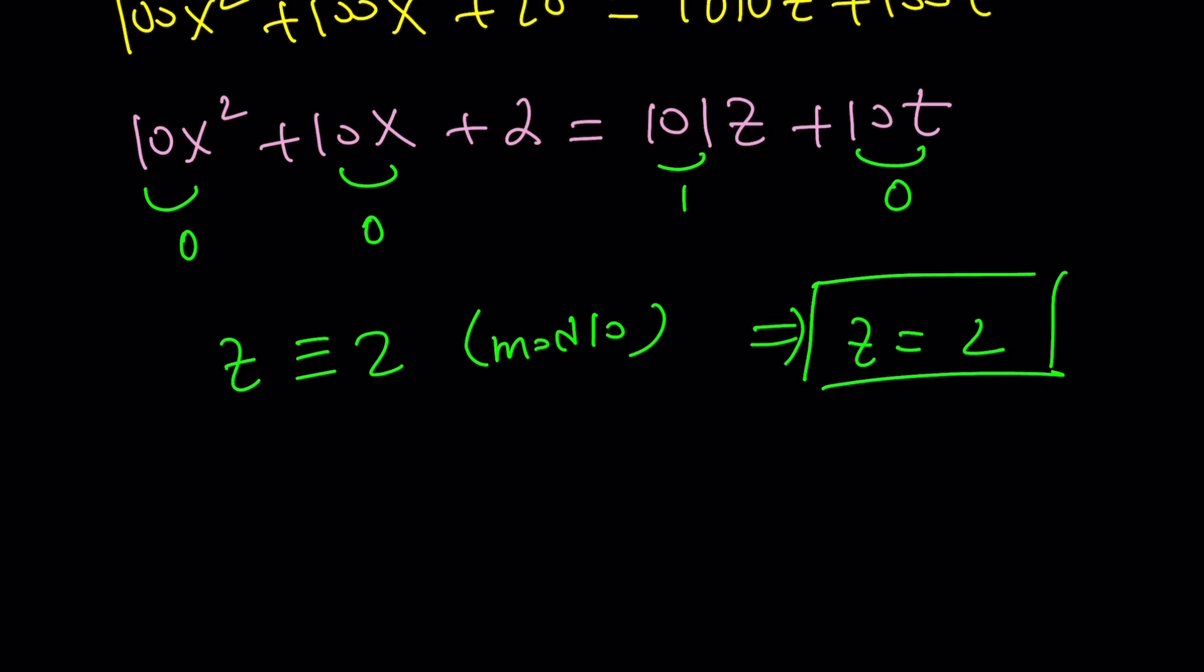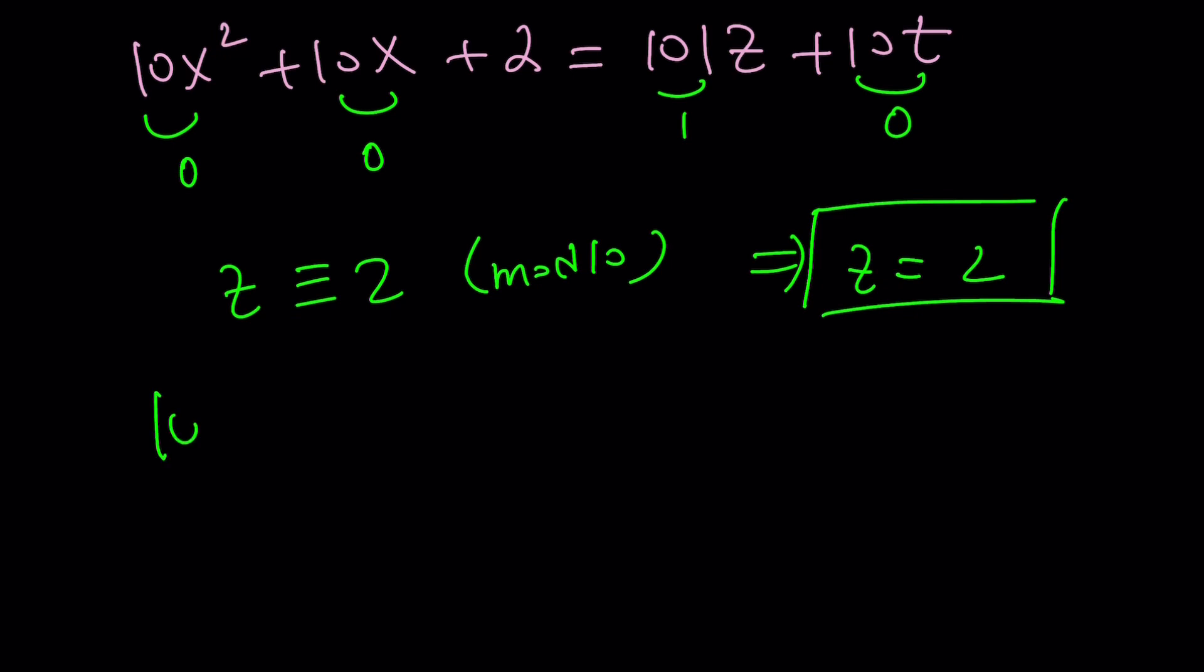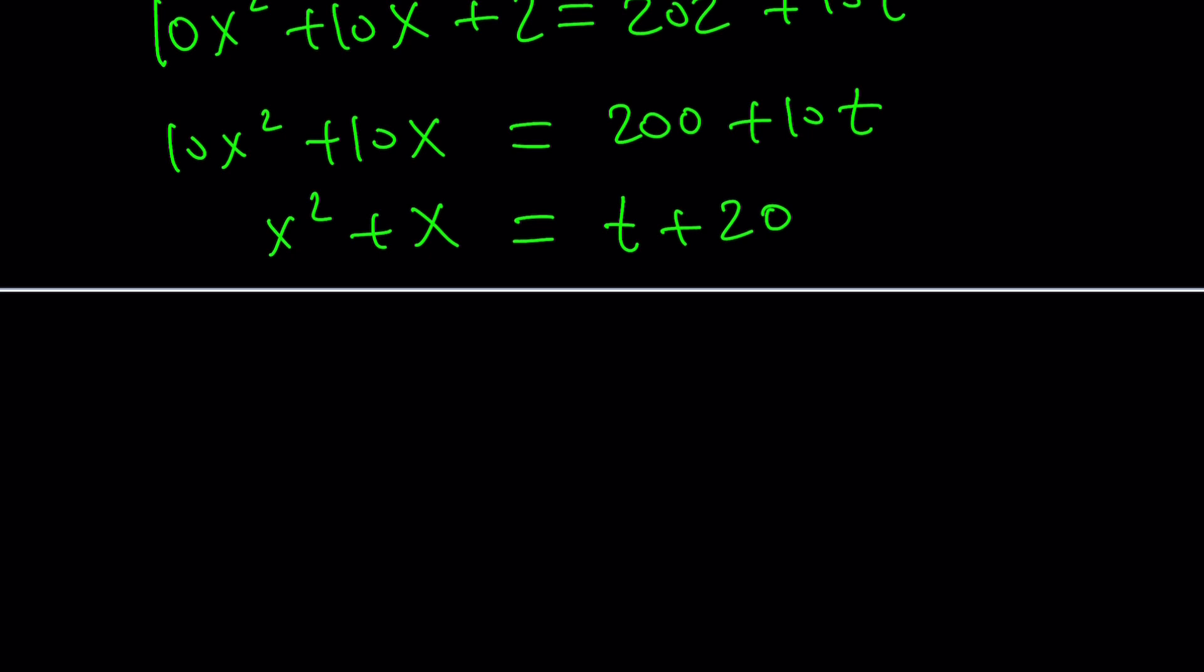We're kind of solving this problem little by little, right? What's the next thing? Replacing z with 2. That's going to give us a great advantage, because if you plug in 2 for z, you get 202 plus 10t, and by subtracting the 2 from both sides, you're going to get a great result, because now everything is divisible by 10. This is going to give me x times x plus 1 equals t plus 20. Now, here's the next thing you need to think about.